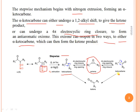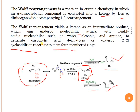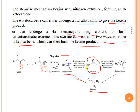The oxirene ring system can reopen in two ways: either back to the alpha-ketocarbene, which then forms the ketene product, or directly to the ketene. In summary, upon nitrogen extrusion, the ketocarbene either directly forms ketene via a 1,2-shift, or undergoes 4π electrocyclic ring closure to form the anti-aromatic oxirene intermediate, which reopens to give the ketocarbene and ultimately the ketene. In short, the Wolff rearrangement is the conversion of a diazo carbonyl compound into ketene by loss of dinitrogen with an accompanying 1,2-rearrangement.